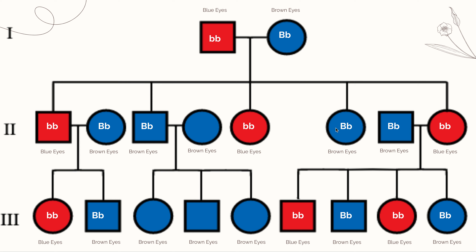Looking at the next individual: they are heterozygous. These individuals also have blue eyes in their offspring, so we can assume they are heterozygous for the same reason. Blue eyes means homozygous recessive; brown eyes with a heterozygous parent will be heterozygous. Those are all the ones we can complete based on the information we know about how traits are passed on.